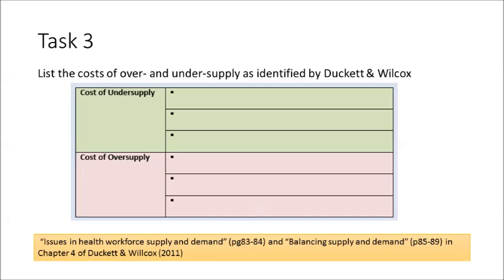Moving on to Task 3. Balancing supply and demand is complex, particularly because there are various consequences — both financial and other consequences — which are associated with either under or oversupplying of the workforce. Read issues in health workforce supply and demand and balancing supply and demand in Chapter 4 of Duckett and Wilcox, and then list the costs of over and under supply as identified by Duckett and Wilcox. Here's a simple table to help you to organise your answers.